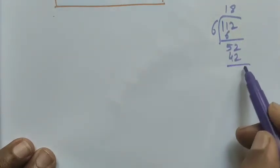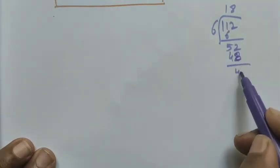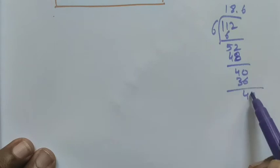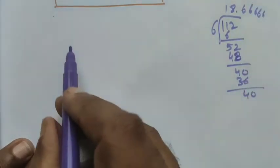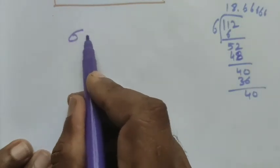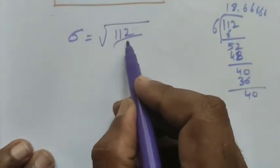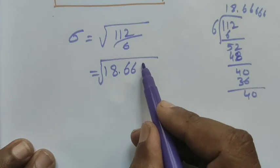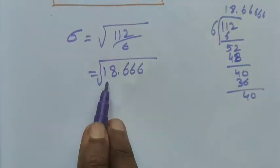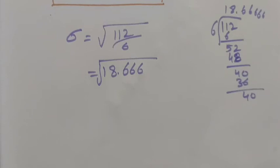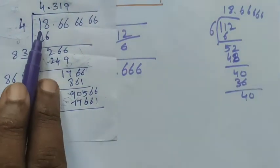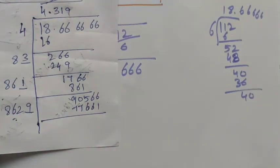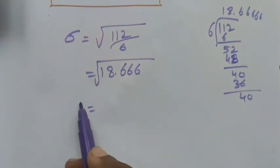Dividing 112 by 6 gives 18.666 repeating. So sigma equals root of 18.666. Finding the square root of 18.666, we get approximately 4.319.